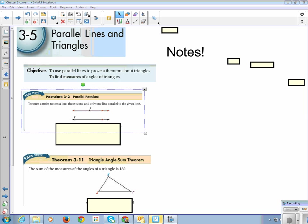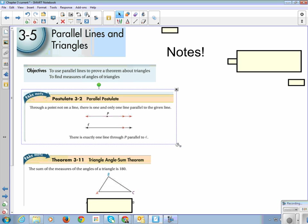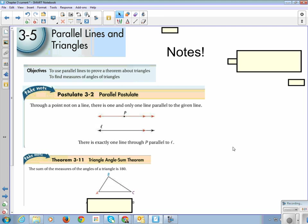So postulate 3-2 is the parallel postulate. Please go ahead and draw a parallel line on top with point P on it and line L, and then they have congruent parallel marks on them. Through a point not on a line, there is one and only one parallel line to the given line. Which means there is exactly one point through P parallel to L.